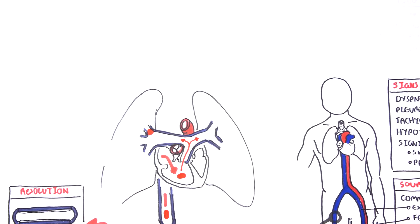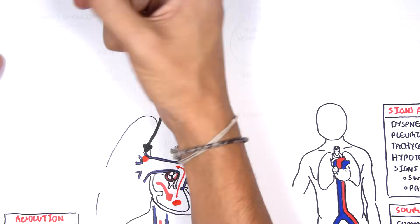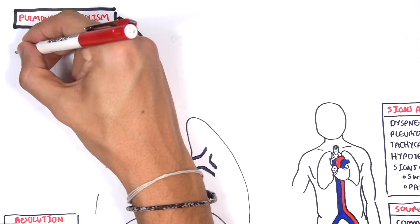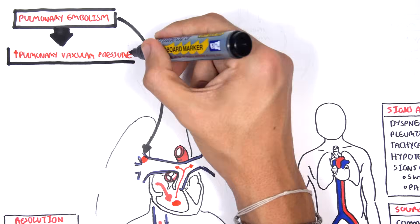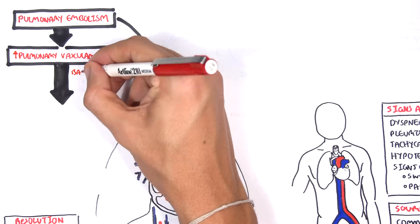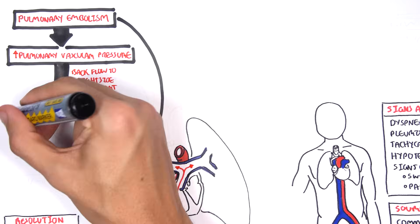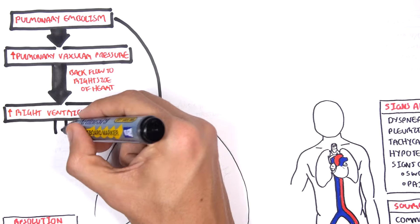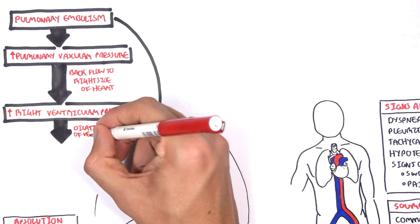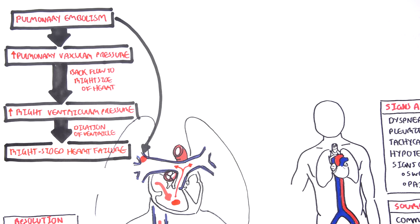We will now look at the pathophysiology. A pulmonary embolism can lead to, depending how big it is, an increase in pulmonary vascular pressure. An increase in pulmonary vascular pressure causes slight backflow of blood to the right side of the heart, and this will lead to an increase in right ventricular pressure. An increase in right ventricular pressure will dilate the ventricles, causing dilation of the right ventricle, which can subsequently lead to right-sided heart failure.